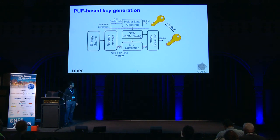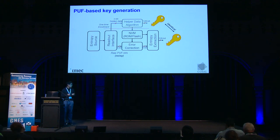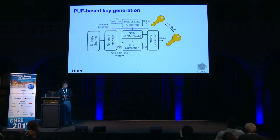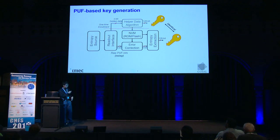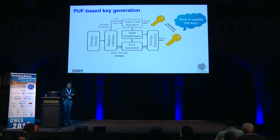Let's begin with a scenario of PUF-based key generation. We have an entropy source on the chip being read out by some circuits, giving PUF outputs which are noisy. In order to use this PUF readout as a key, we need extra circuits including helper data, storage, and error correction to always get the same key. The question is: how can we update the key without throwing away the device and getting a new one?